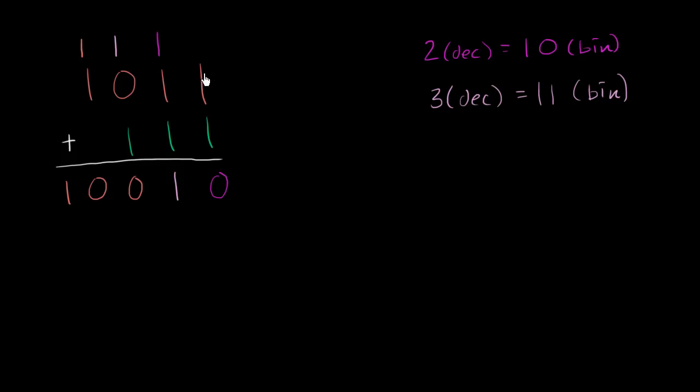And we can verify that this actually makes sense by thinking about what these numbers are. Remember, this number right over here, if we wanted to think of it in decimal, is going to be one plus two, plus not four, but plus eight. So this is 11, if we were to write it in decimal. And this right over here is one plus two plus four, which is equal to seven, if we were to write it in decimal.